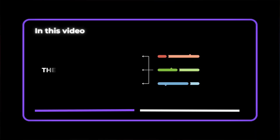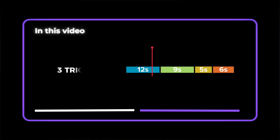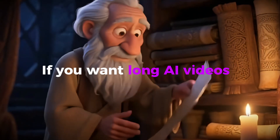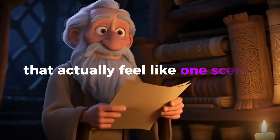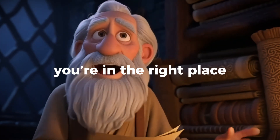In this video, I'm giving you the exact framework to turn short generations into longer, coherent scenes, and I'll show you three simple tricks that push past the five-second wall while keeping your character consistent. If you want long AI videos that actually feel like one scene, you're in the right place.